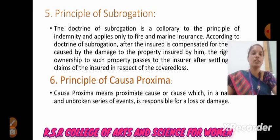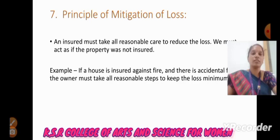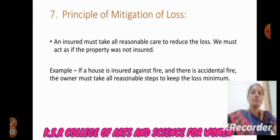Next, principle of causa proxima: Causa proxima means proximate cause, or the cause which in a natural and unbroken series of events is responsible for the loss or damage. Finally, the last principle is mitigation of loss: An insured must take all reasonable care to reduce the loss, and must act as if the property was not insured. For example, if a house is insured against fire and there is an accidental fire, the owner must take all reasonable steps to keep the loss to a minimum.